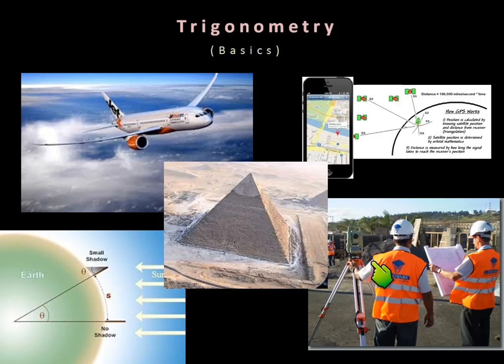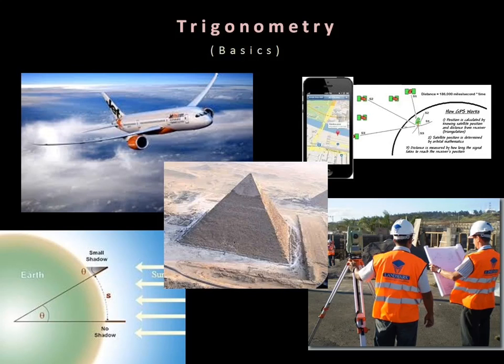Anytime you see a survey team — you've probably seen these guys out with a little scope, standing in the middle of the road — what they're actually doing is measuring the ground in preparation for some kind of construction project. Anytime you see buildings, there was trigonometry involved in figuring out the landscape and what they need to do to get ready to build the building.